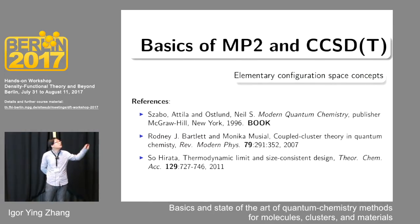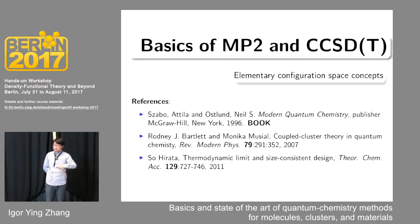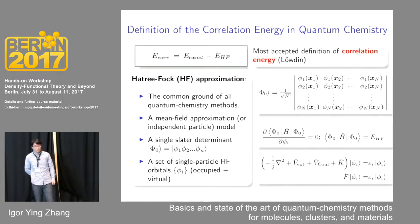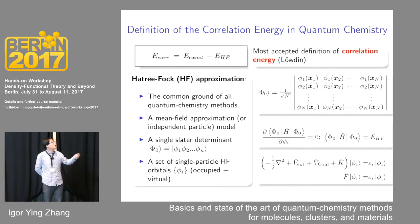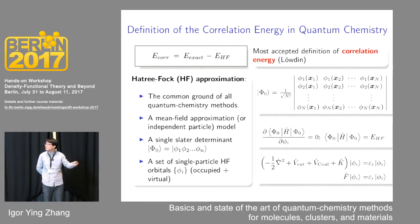I would now like to briefly review some basic concepts of MP2 and CCSD(T). I will introduce them using a native quantum chemistry viewpoint — using the elementary configuration space concept to describe MP2 and CCSD(T) via the configuration interaction concept. Most single-reference quantum chemistry methods are based on the Hartree-Fock approximation. Hartree-Fock theory is a mean-field approximation where the approximate wave function is a single Slater determinant comprising a set of single-particle Hartree-Fock orbitals.